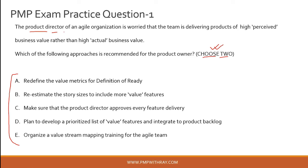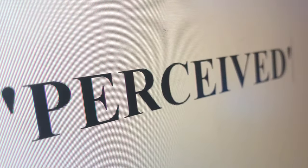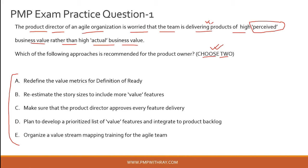The product director of an agile organization is worried that the team is delivering products of high perceived business value rather than high actual business value. Perceived value is something that may appear valuable to the customer but when the actual product gets deployed, it may not provide the required benefits. That is the difference between perceived value and actual value.